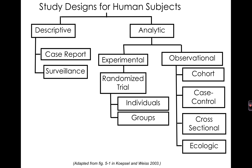Looking at our schematic overview of study designs for human subjects, all the analytic study designs on the right are appropriate for evaluating cause and effect — whether experimental studies randomizing people to treated and untreated, or observational studies observing exposed and unexposed individuals for their ultimate outcomes. We're interested in cause and effect, and these measures of association are the ones we'll use to describe the amount of association related to the hypothesized cause and effect.